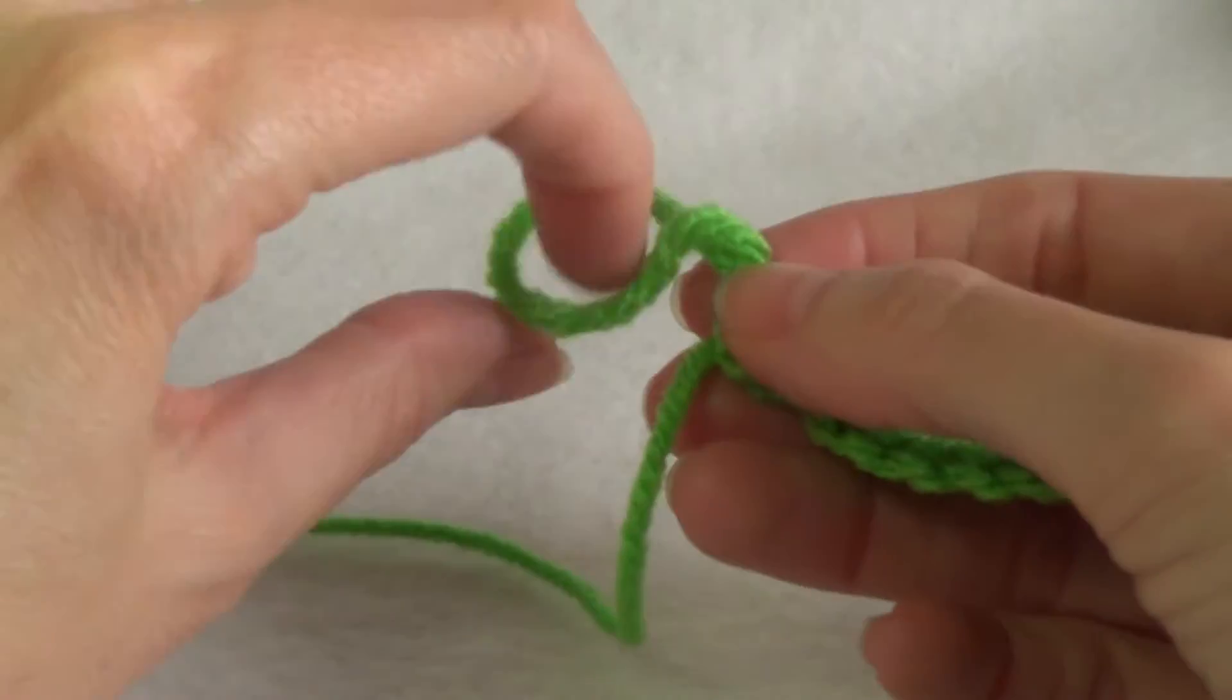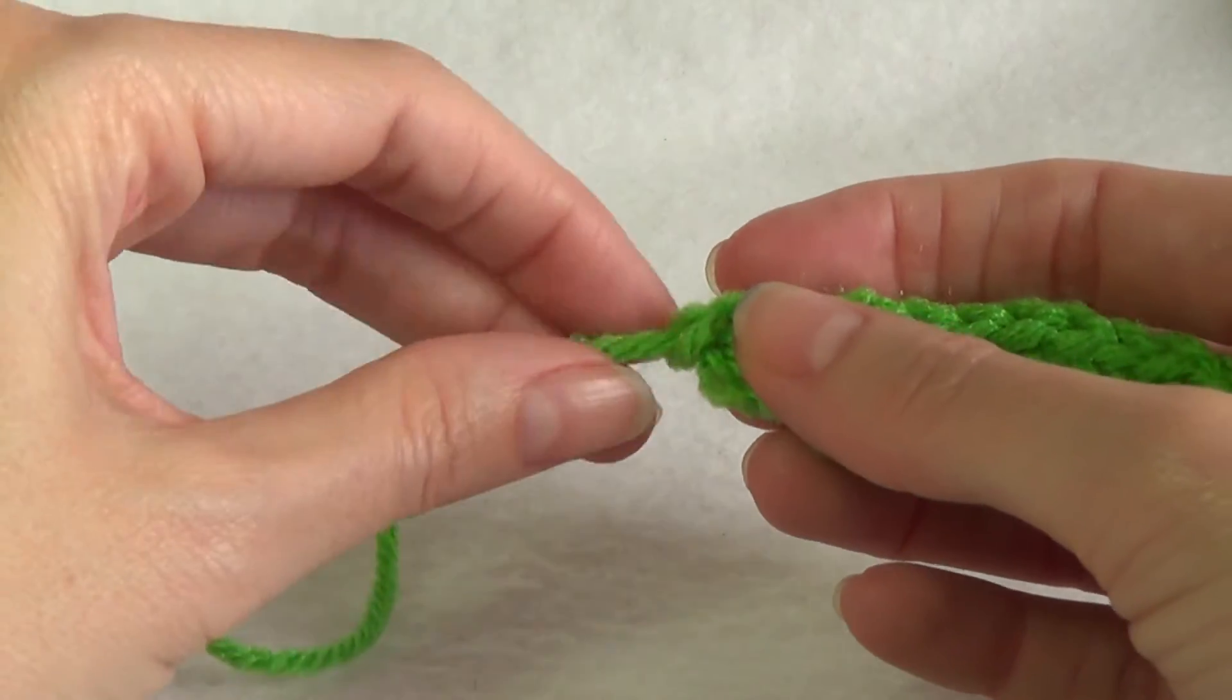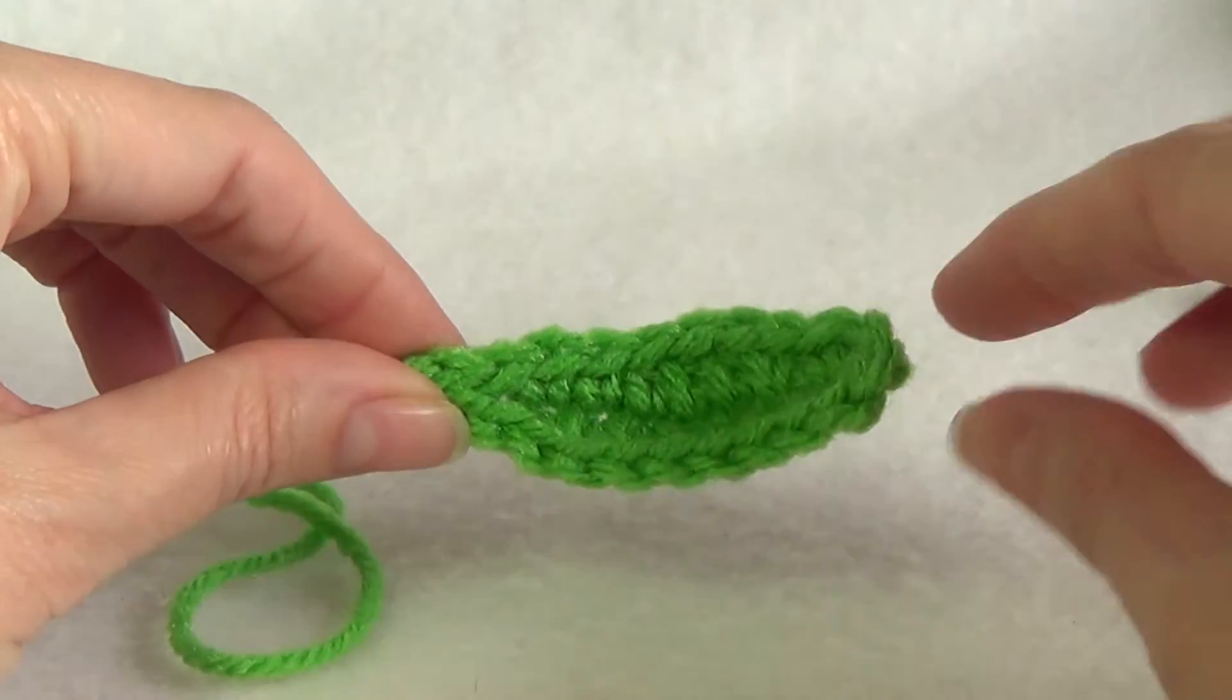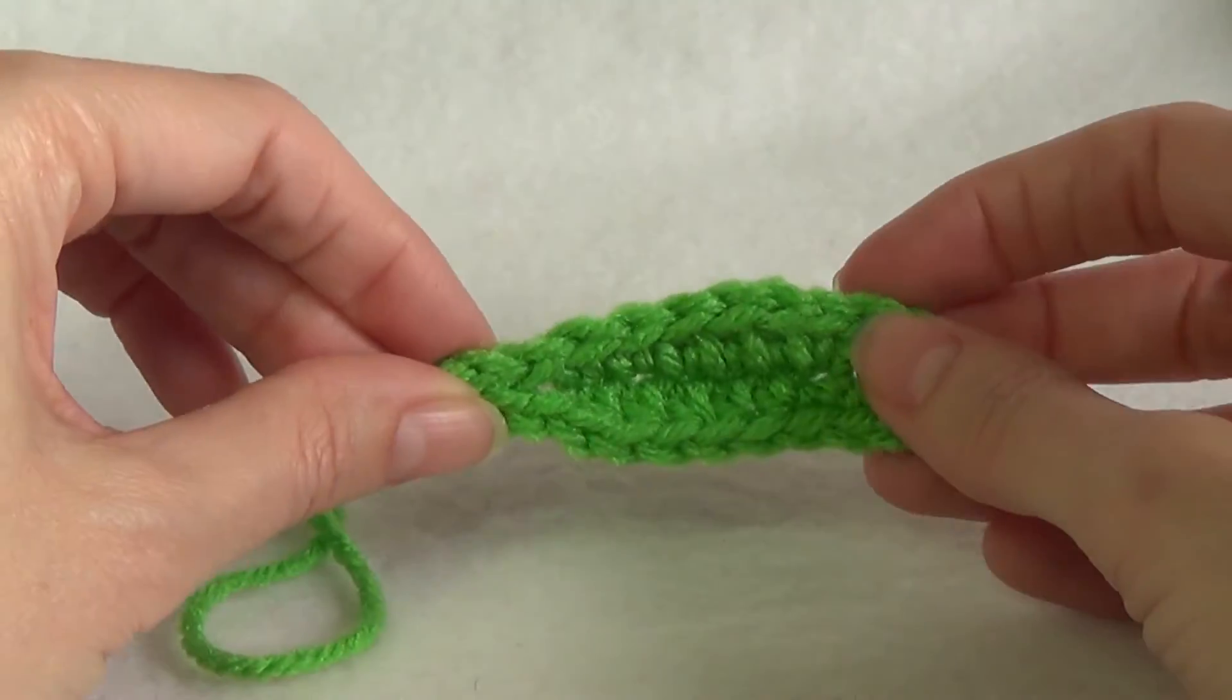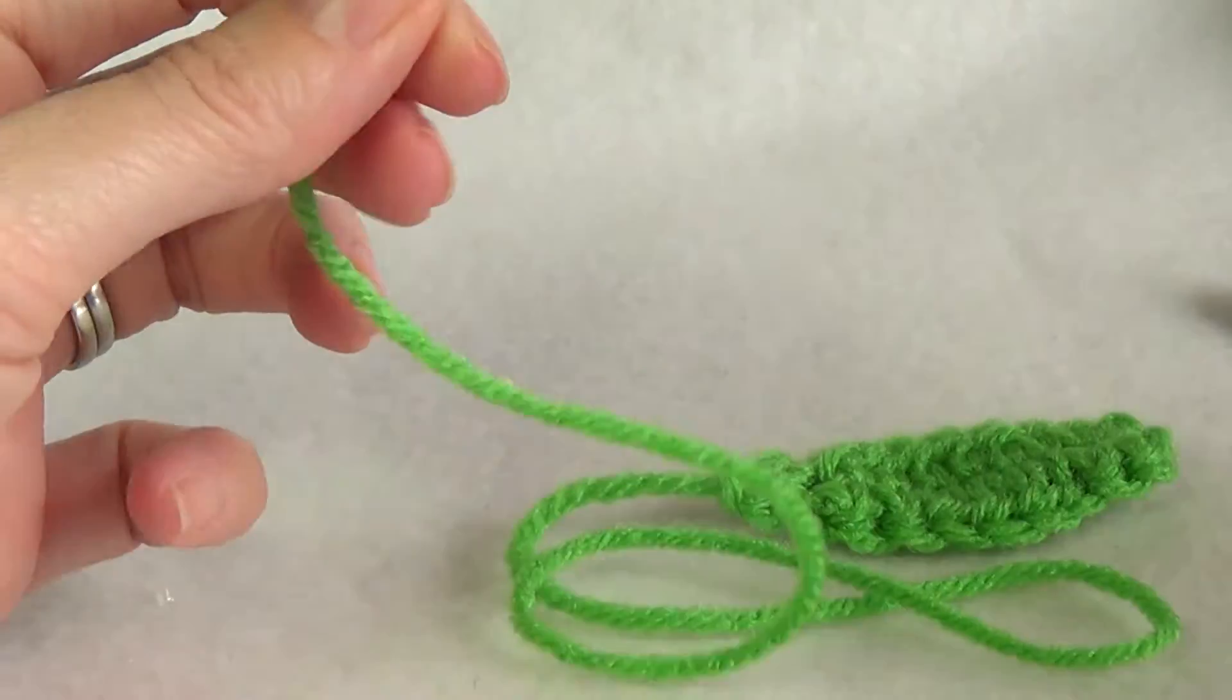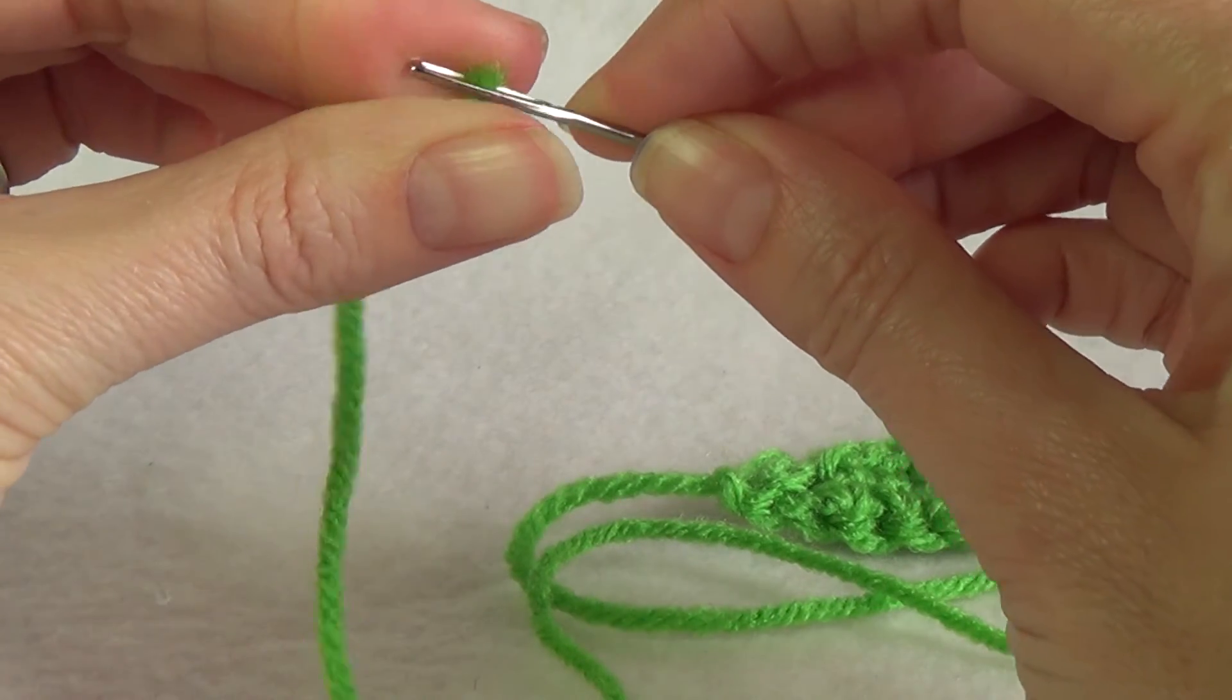Once we have the end finished you're going to cut off your yarn. You're going to leave about 12 inches of yarn if you're going to sew it onto a project. If you're going to sew all the way around the leaf to a project so it's stuck down like that, or if you just want to sew just the tip of the leaf you won't need to use as much yarn.